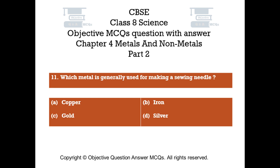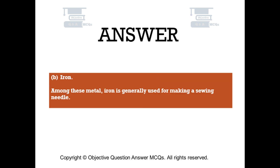Question number 11: Which metal is generally used for making a sewing needle? Option A: Copper. Option B: Iron. Option C: Gold. Option D: Silver. The right answer is Option B — Iron. Among these metals, iron is generally used for making a sewing needle.